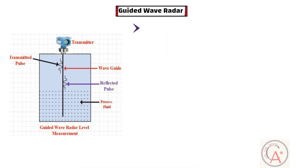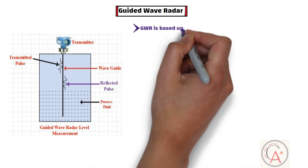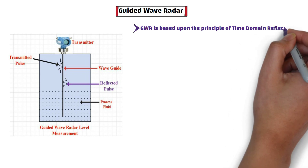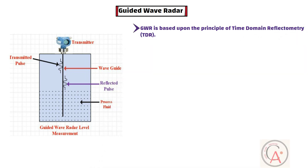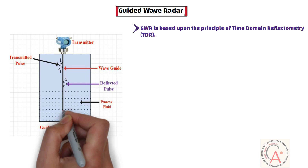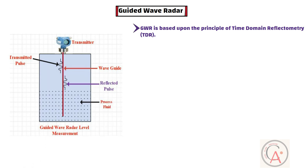Guided wave radar technology is based upon the principle of time domain reflectometry, which is an electrical measurement technique that has been used for several decades in various industrial measurement applications. In this method, a low-energy electromagnetic pulse is guided along a probe. When the pulse reaches the surface of the medium being measured, the pulse energy is reflected up the probe to the circuitry, which then calculates the fluid level from the time difference between the pulse sent and the pulse reflected.